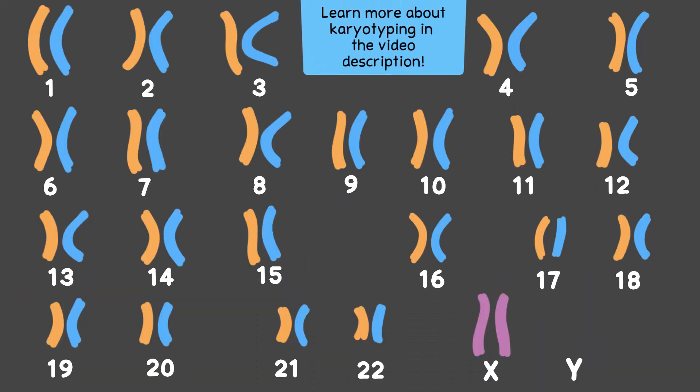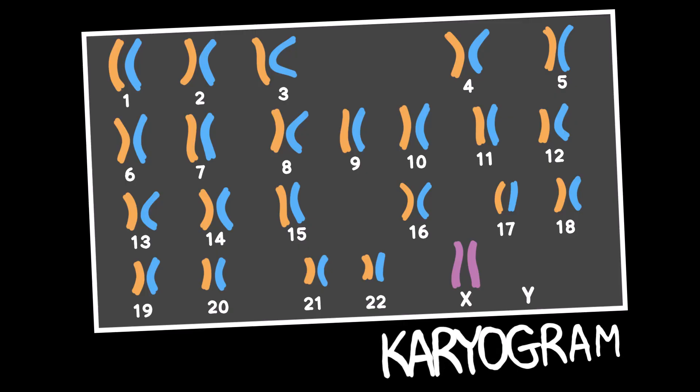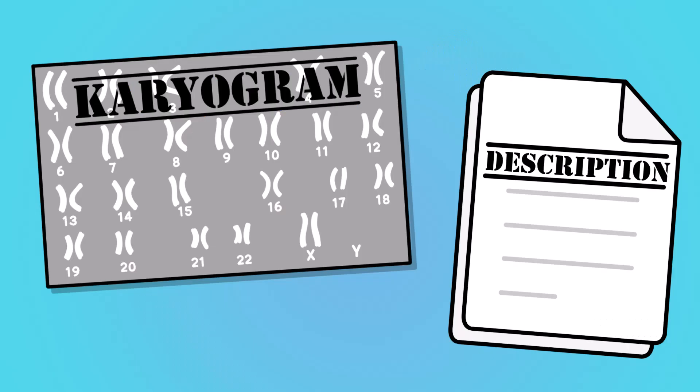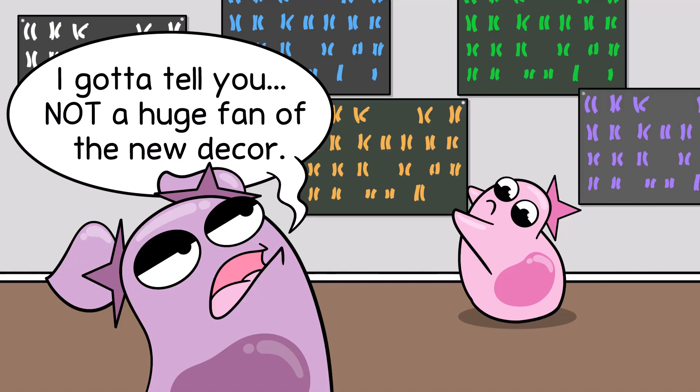You can produce an image from this. To learn more about karyotyping and producing the images, please see our video description. The image itself produced can be called a karyogram. Just to note, it's common for many sources to use the term karyotype as a general term for both the description of the chromosomes and the visual image that may be produced and included. However, more technical sources tend to distinguish the visual picture as a karyogram, which tends to be produced as part of karyotyping.